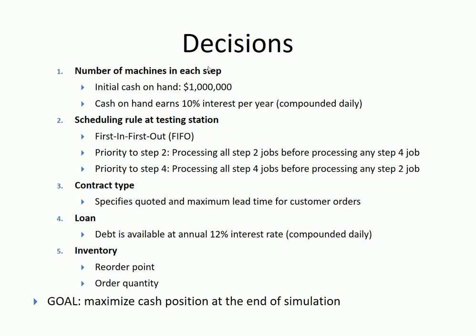Those are the two decisions from the previous run. Now there are three more new decisions. The third decision is contract type. You can specify the contract you're going to offer to customers. I will explain that in the next slide.